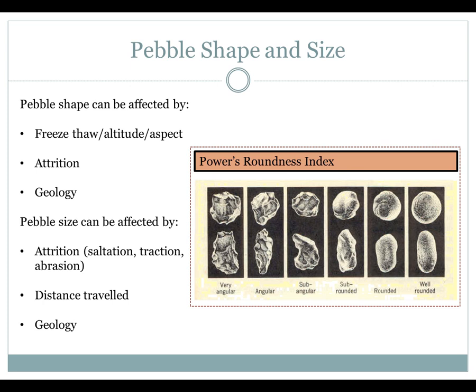Attrition — you can go on and explain what attrition is and how it affects the pebbles. Geology — there's going to be a slide on looking at the types of rock that are actually present in Clackmannanshire and the local hills, so you can talk about that. And then pebble size, again, can be affected by geology, attrition, and also the distance travelled.